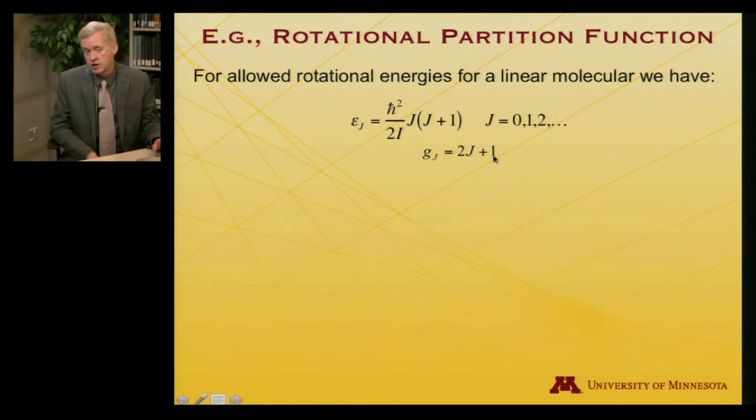So the ground state, j equals 0, not degenerate, g equals 1. But the first excited state, 2 times 1 plus 1, is threefold degenerate, and so on.